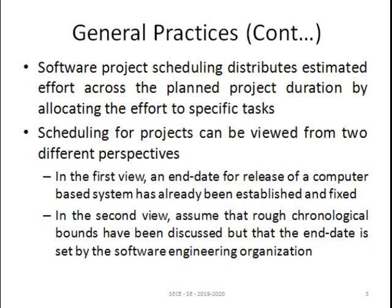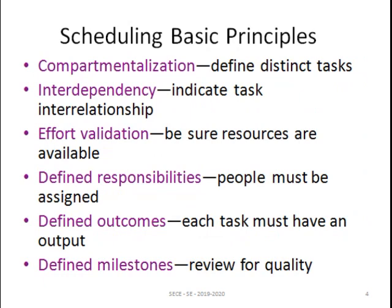The second view assumes that rough chronological bounds have been discussed, but the end date is set by the software engineering organization. For each and every task you will have a date for completion, and also a delivery date for the entire project. The date is fixed by the software engineering organization, not by the customer. Resources have to be allocated for completing each and every defined task — that is what we have to do in project scheduling.